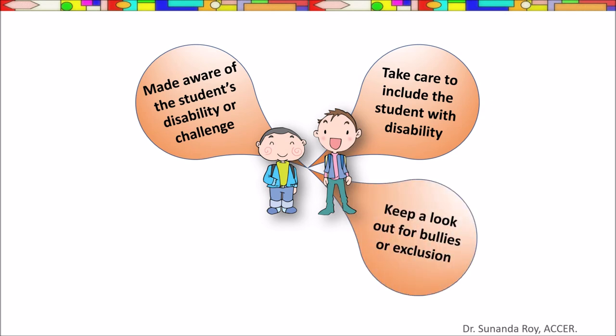The buddy is asked to be on the lookout for any bullying or exclusion. Differently abled students often become targets for bullies. This is because the differently abled students may be physically weak and the bullies tend to isolate such students and bully them. Buddies can help the differently abled students and protect them from such situations, for example, handling bullies in the school bus or even on the playground.